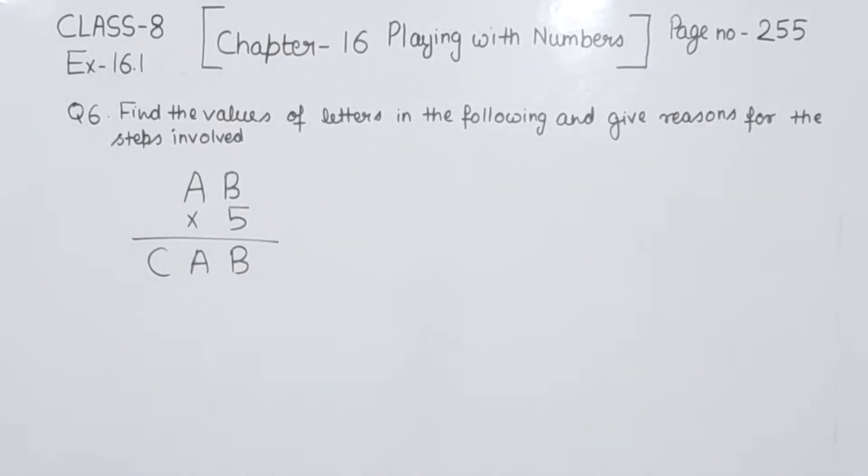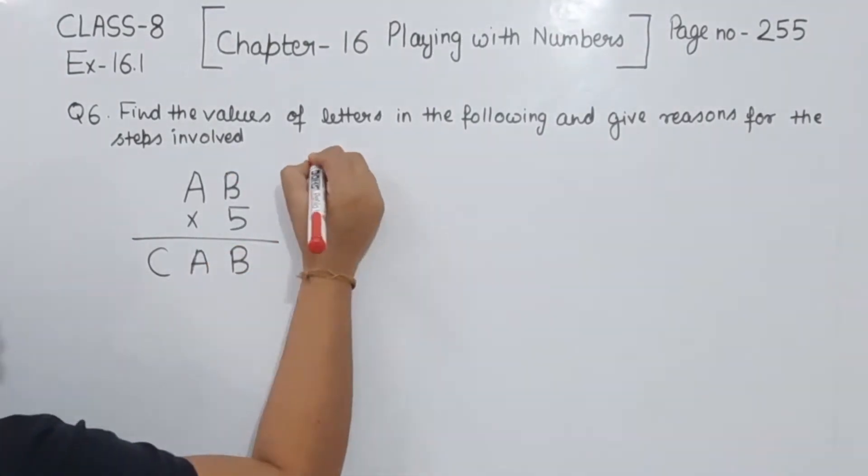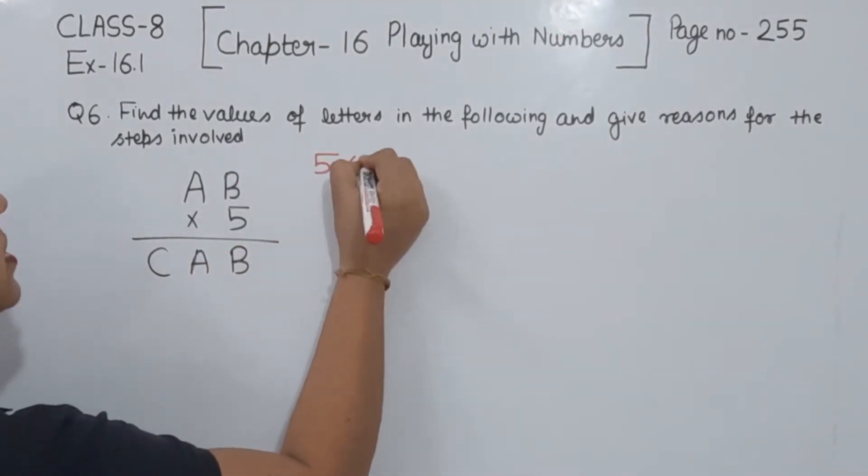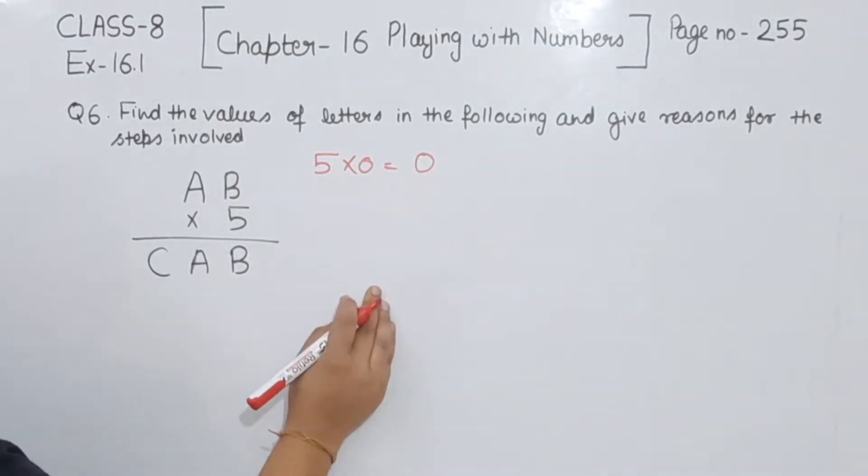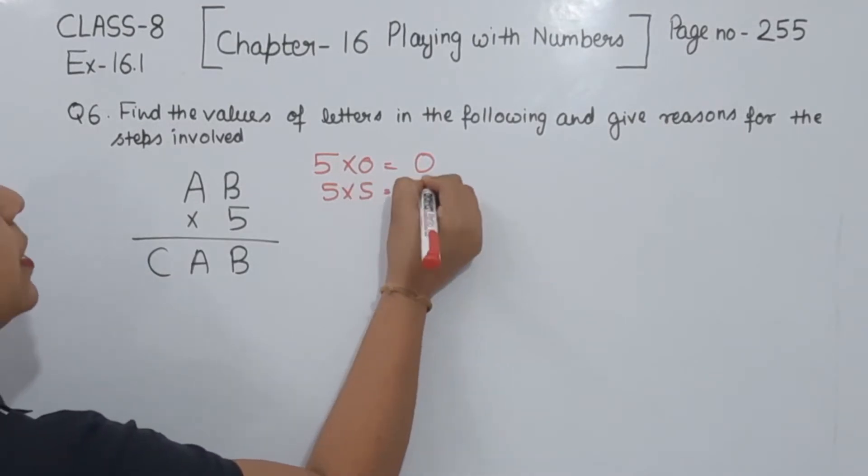Now I have to multiply 5 with the number so I can get the same number here and here. We should have a number if we multiply it by 5, we get the same number. So we can have 5 multiply by 0, we will have equal to 0, and if we multiply 5 by 5, then we will have equal to 25.